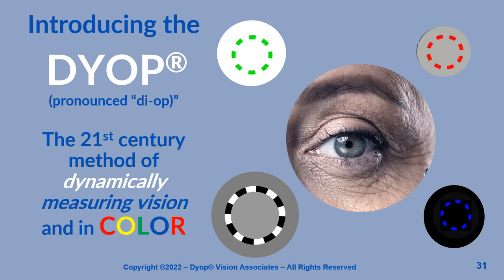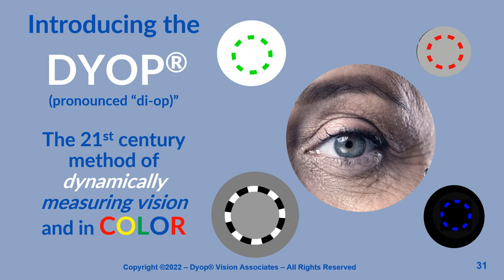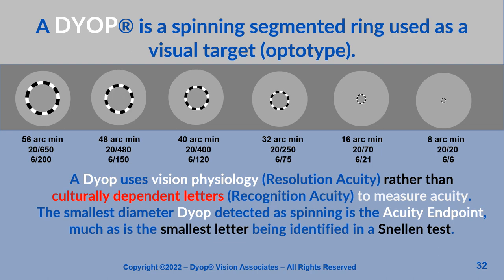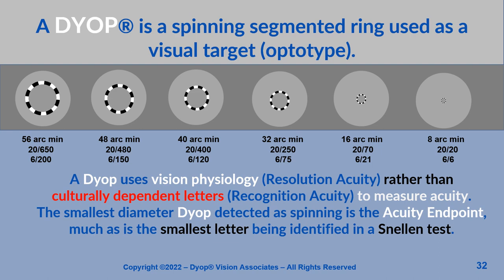The solution: introducing the dyop, the 21st century method of dynamically measuring vision and measuring it in color. A dyop is a spinning segmented ring used as a visual target. A dyop uses vision physiology rather than culturally dependent letters to measure acuity. The smallest diameter dyop detected as spinning is the acuity endpoint, much as the smallest letter identified in a Snellen test.